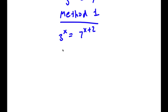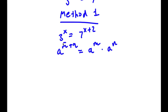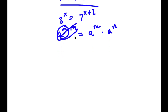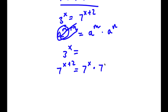An important property is that if I have something in the form a to the power of m plus n, this is equal to a to the power of m times a to the power of n — the exponent essentially distributes with the base. So right here, we have 7 to the power of x plus 2, and this is going to equal 7 to the power of x times 7 to the power of 2.